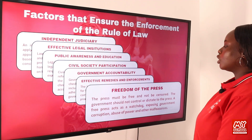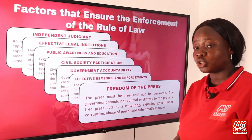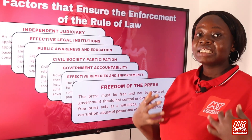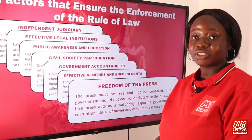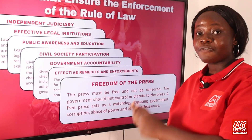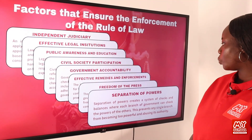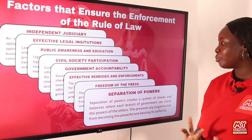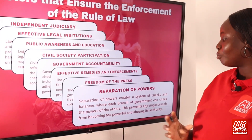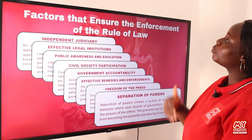Freedom of the press is also essential: the press must be free and not censored. The government should not control or dictate to the press. A free press acts as a watchdog, exposing government corruption, abuse of power, and other malfeasance, informing citizens so they can hold leaders accountable at the polls. Finally, separation of power creates a system of checks and balances where each branch of government can check on the powers of the others, preventing any single branch from becoming too powerful and abusing its authority.